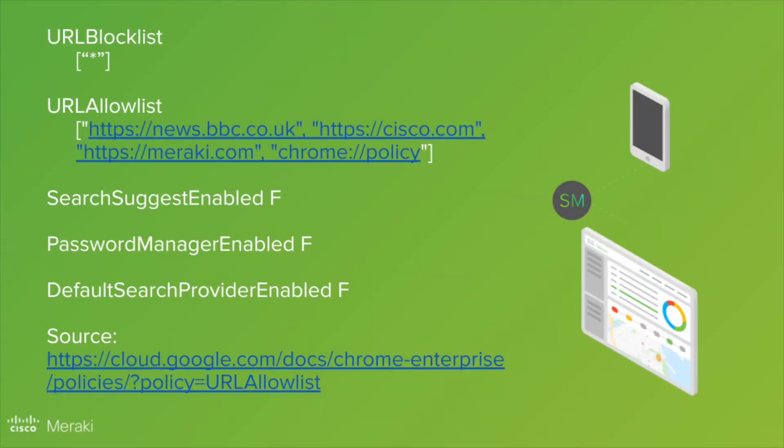Let's spend a moment to review the values we've just typed in. We've got the URL block list set to block absolutely everything with a star. We've got a URL allow list with some specific websites typed in. We also have search suggestions disabled, password manager disabled, and the default search provider disabled. There's a lot more information available at the link on the web page.